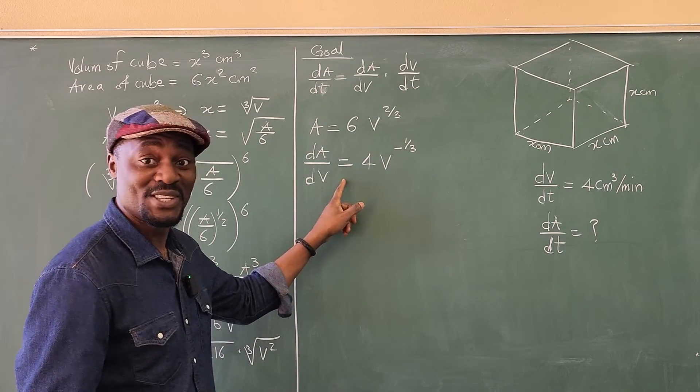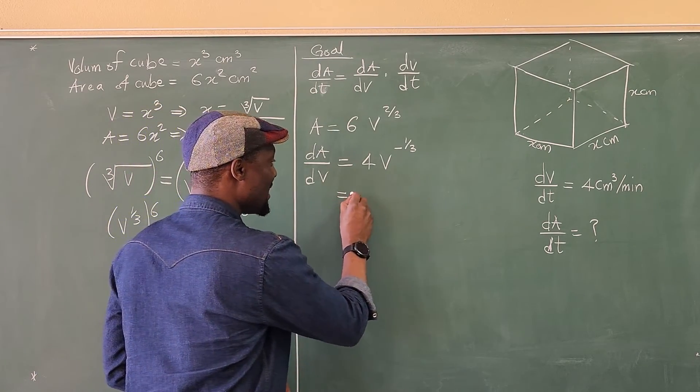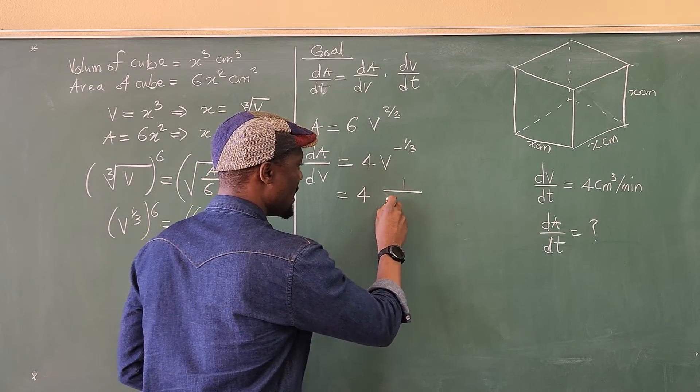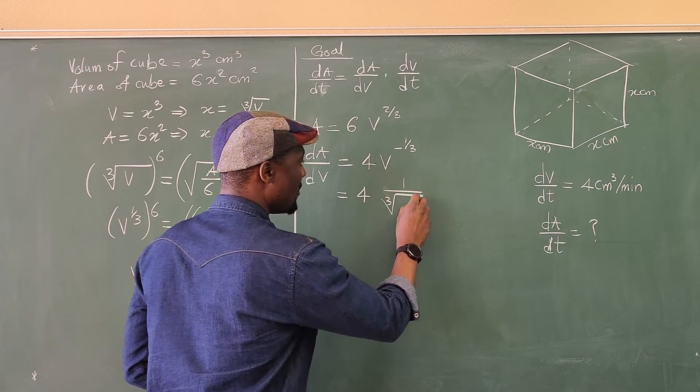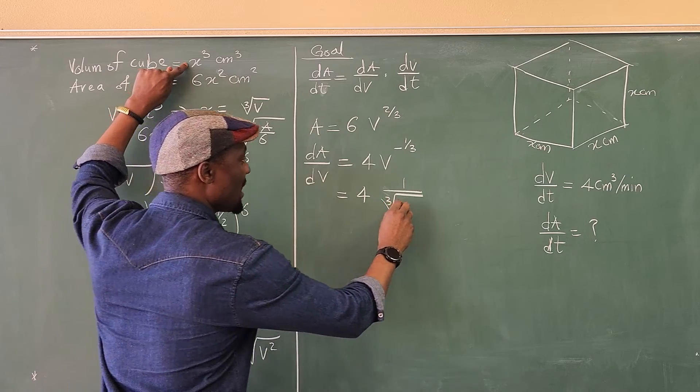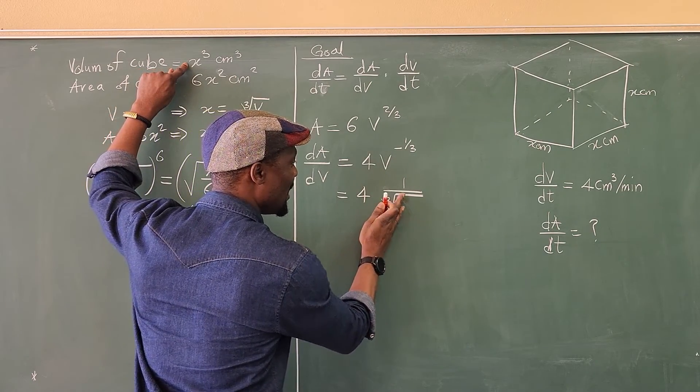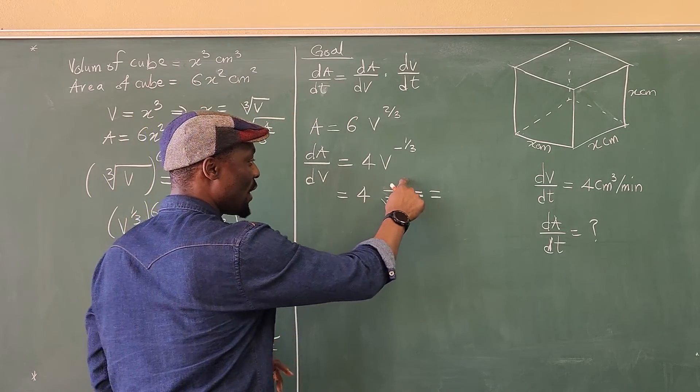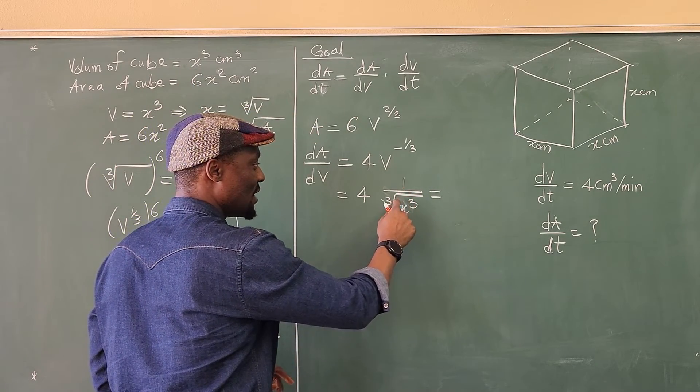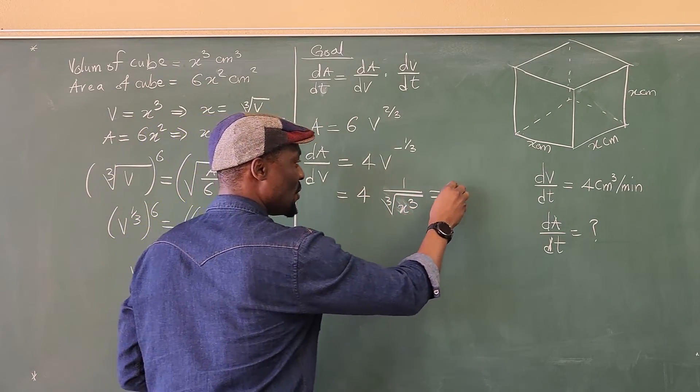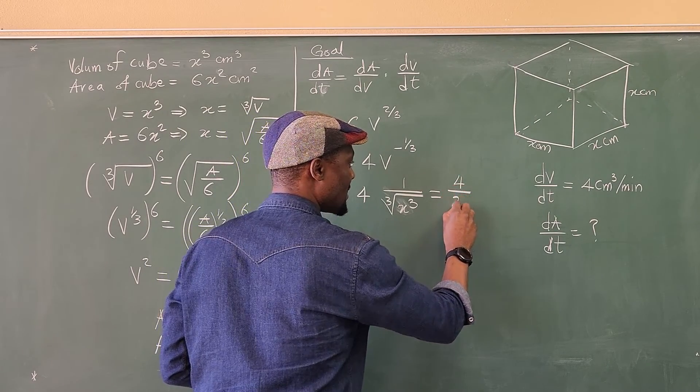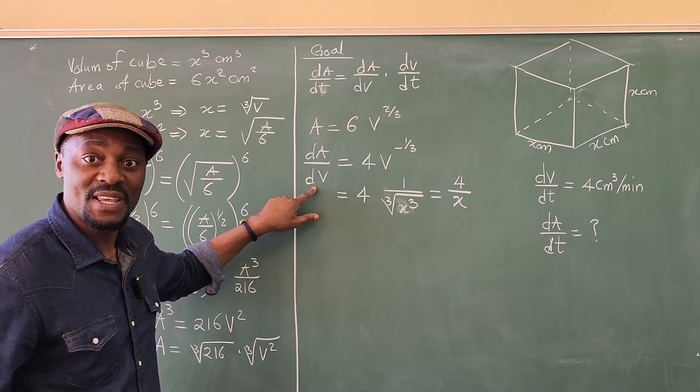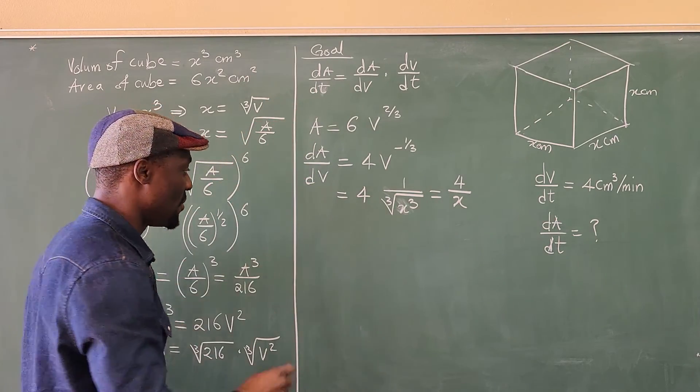Actually, let's start substituting because we're done. But we know that this is four times one over the cube root of the volume. But we said the volume is x cubed. So this is basically one over the cube root of x cubed, which is four times one over x, which is four over x. So we've gotten our dA/dV. Let's go back here and use our formula.